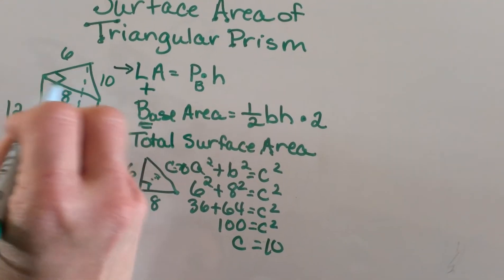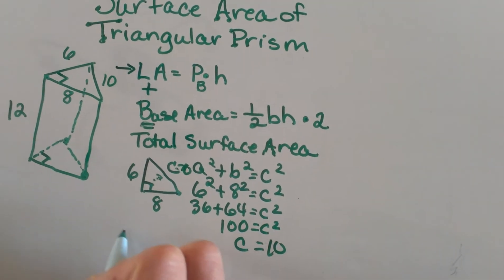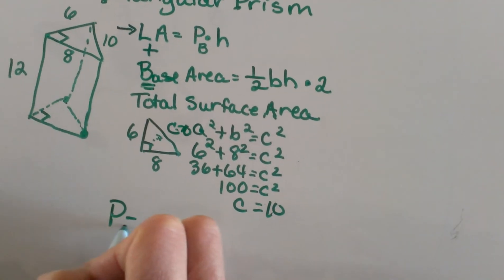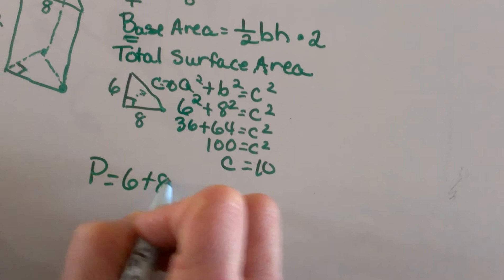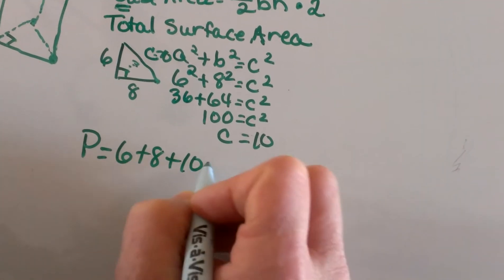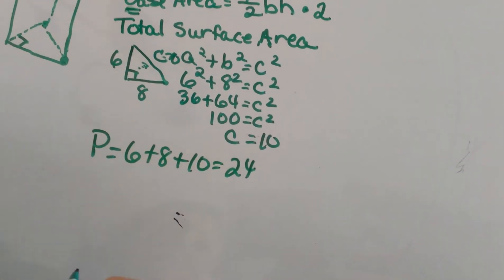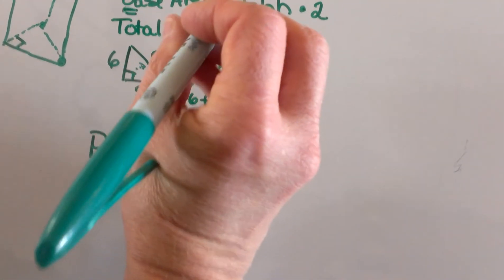Now I can figure out my perimeter. The perimeter of my base is 6 + 8 + 10, which is 24. I'm going to take that and look at our formula again.